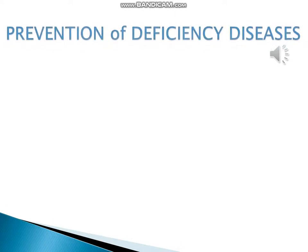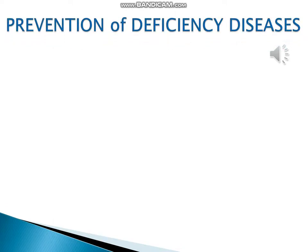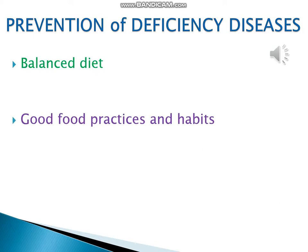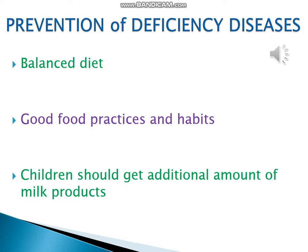Deficiency diseases can be prevented by adopting the following measures: one should take a balanced diet containing all types of nutrients, and one must follow good food practices and habits. Children must be given an adequate amount of milk, milk products, and additional food items like juices, soft-boiled rice, produce, etc.